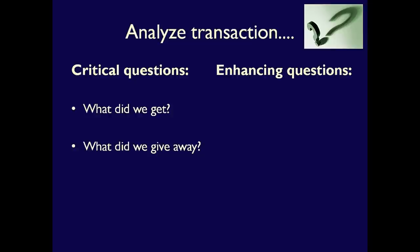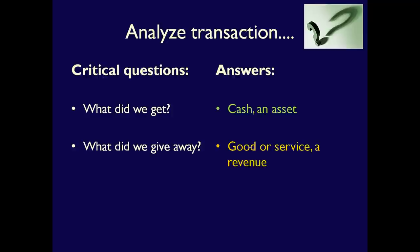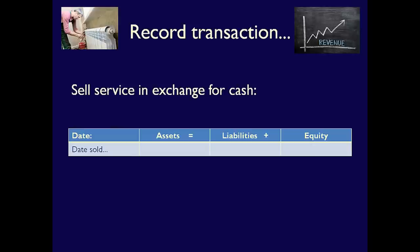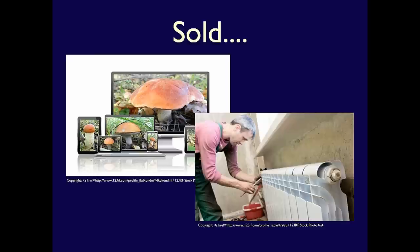If there's still confusion, we can ask ourselves the enhancing questions: what did we earn, what did we use or consume, and what do we owe? For a cash sale, we got cash — an asset because it has future economic benefit — and we gave away a good or service, meaning we earned revenue. The impact on the accounting equation is an increase in assets (cash) and an increase in equity through revenues. This is an external transaction because it's an exchange between two parties, one of whom is outside the company.